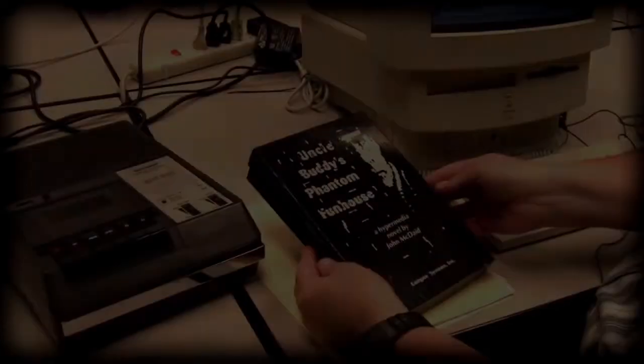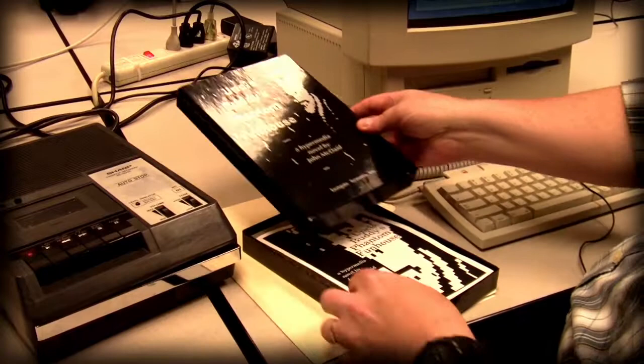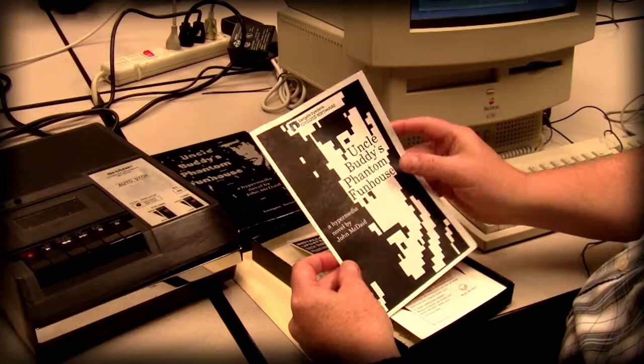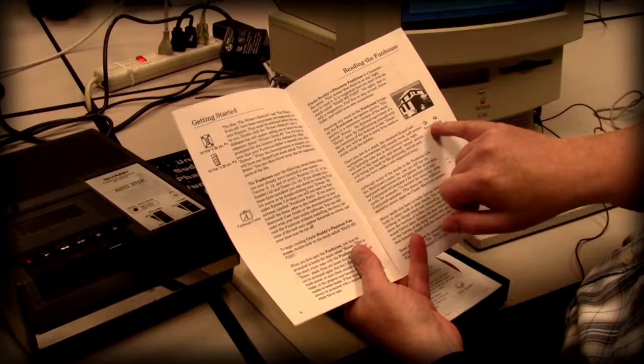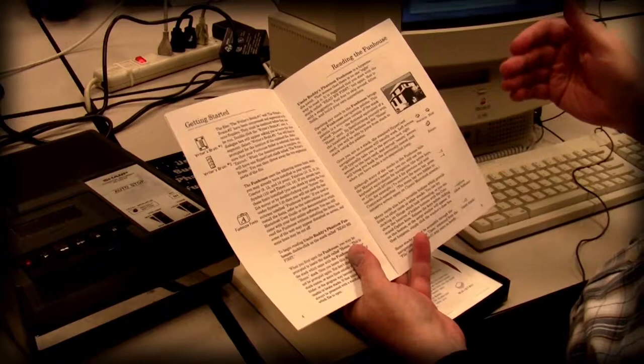This is the box for Uncle Buddy's Phantom Fun House and inside is the instruction manual. This was necessary when this came out because you needed to explain to people how hypertext needed to be read with previous and next arrows so that people understood that you could go forward and backward in the text.